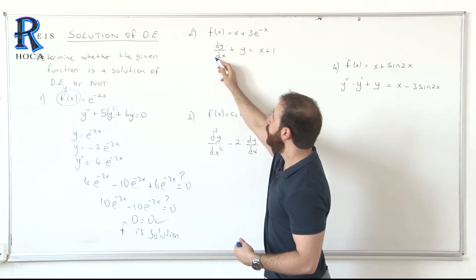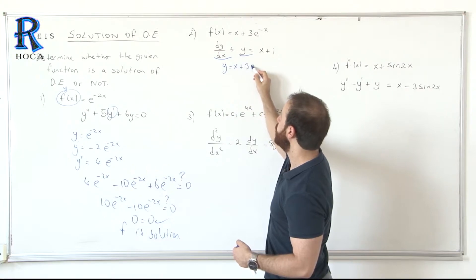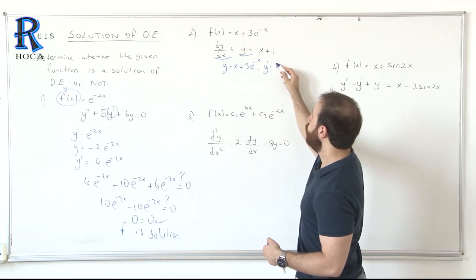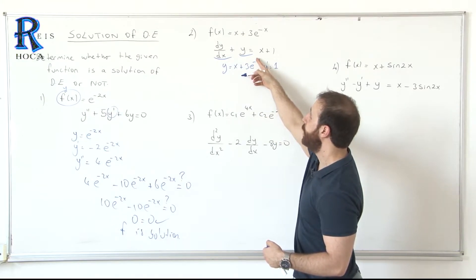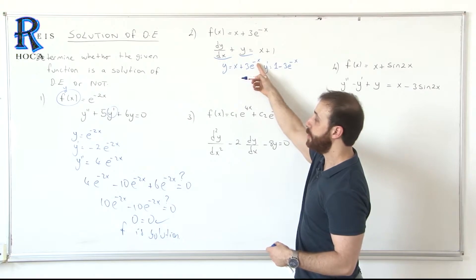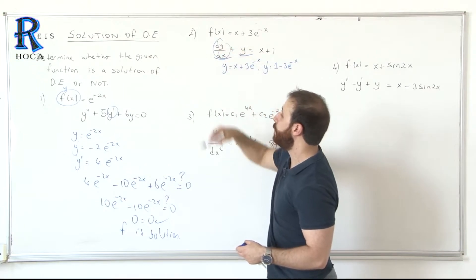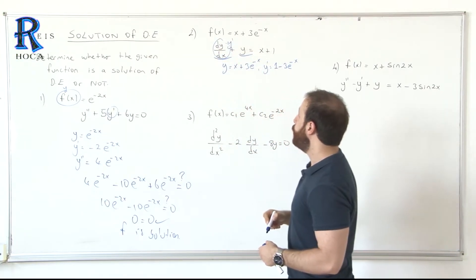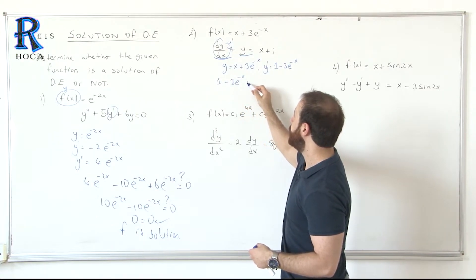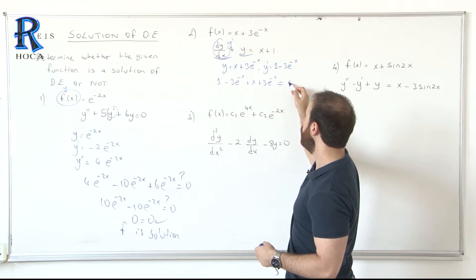What we need are y prime and y. The function f is y equals x plus 3e^(-x). The derivative y prime equals 1 plus the derivative of 3e^(-x): the derivative of e^(-x) gives minus 1 times 3, so minus 3e^(-x). Thus y prime equals 1 minus 3e^(-x). Let's substitute: y prime plus y gives (1 minus 3e^(-x)) plus (x plus 3e^(-x)).